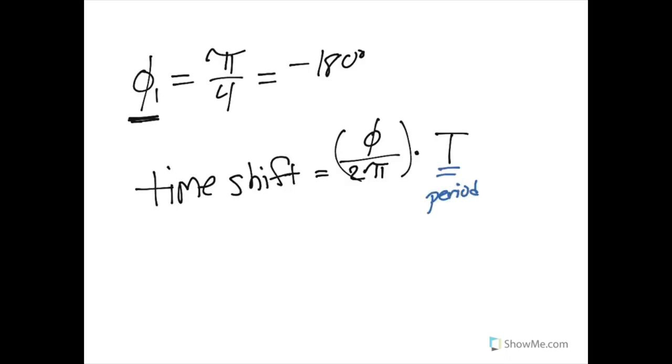So basically you're trying to figure out how much of this entire period is this wave off. So if I'm 90 over 360, and that's my phase, then I am one quarter of the period away.